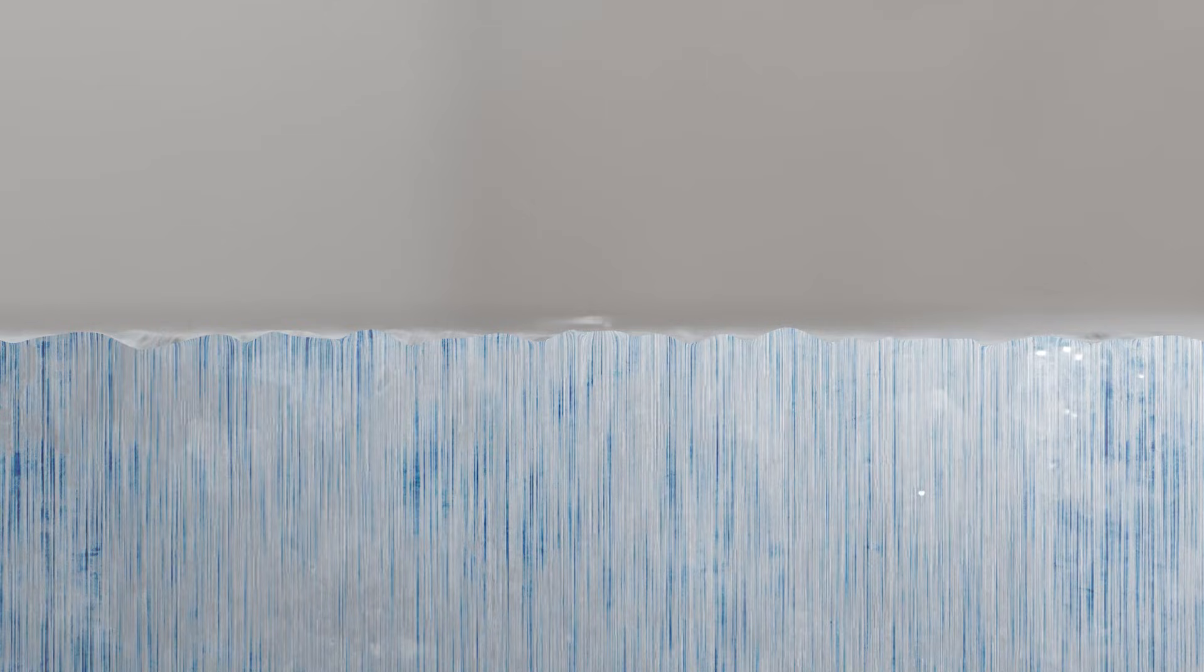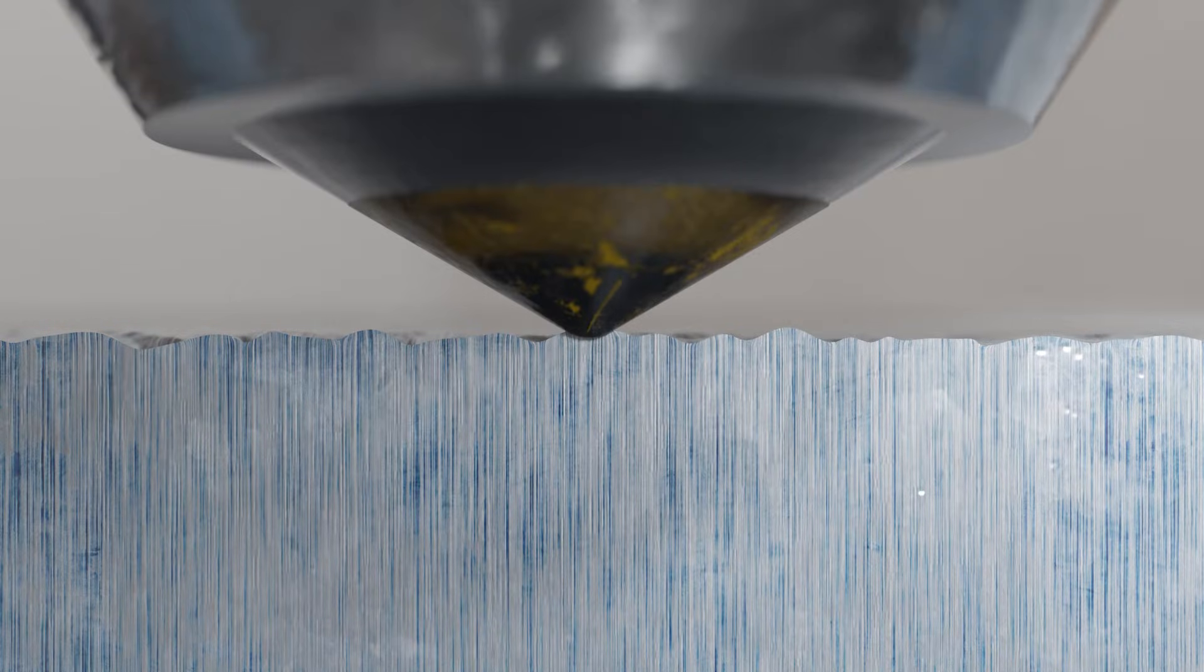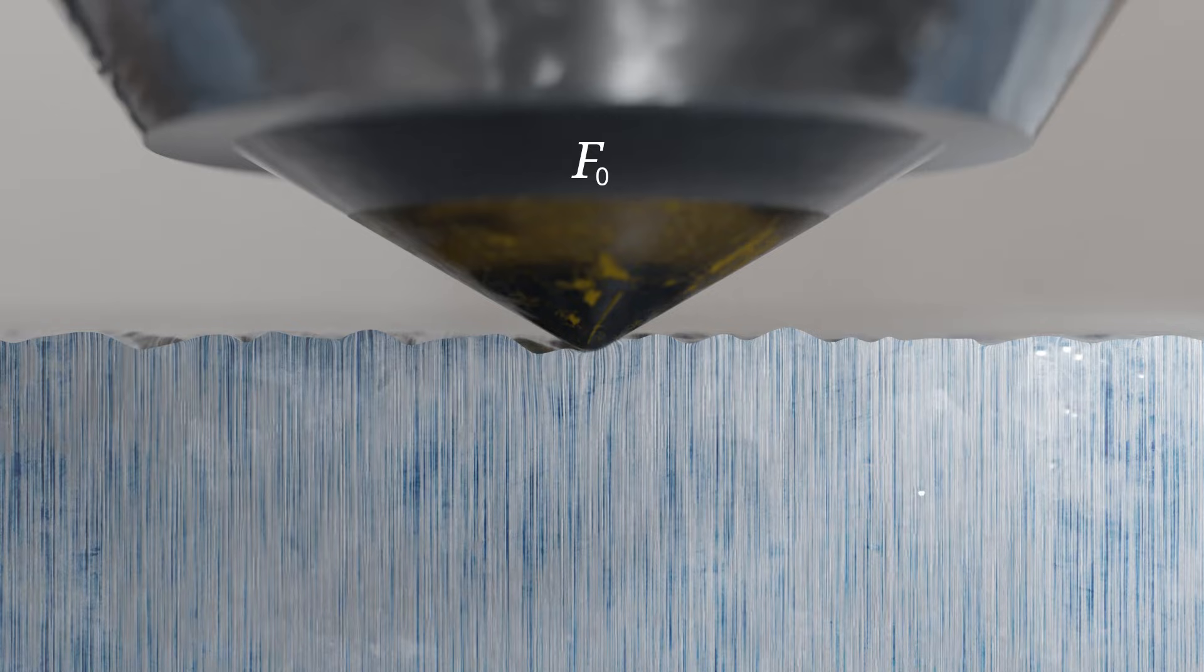The Rockwell hardness test is performed in three steps. First, the indenter is applied to the test surface with a preload F0 of 10 kilopons, equivalent to 98 newtons. This initial load compensates for potential setting effects in the sample and any clearance in the measuring instrument. Additionally, it eliminates surface irregularities on the material sample, which could otherwise significantly affect the depth measurement. After holding the preload for a brief period, the depth measurement sensor is set to zero. This zero point serves as the reference level for measuring the indentation depth.